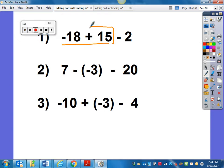To solve this one, I first look at the first part of the problem. Negative 18 plus 15 is a negative 3. I subtract 2 and I get negative 5.